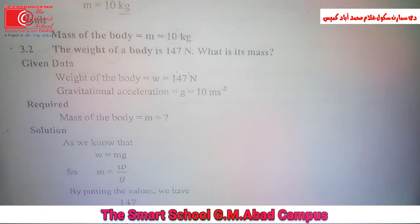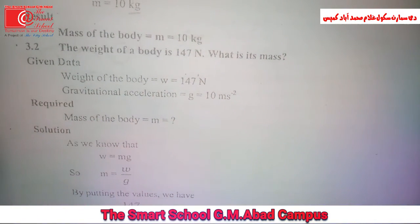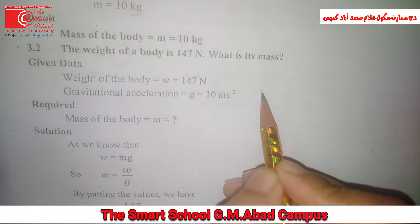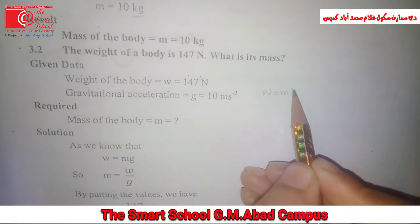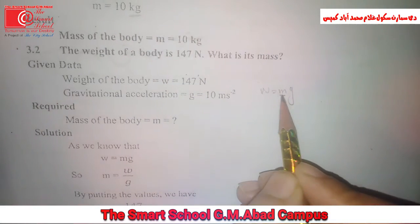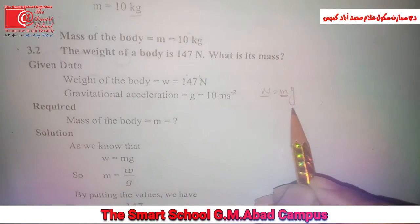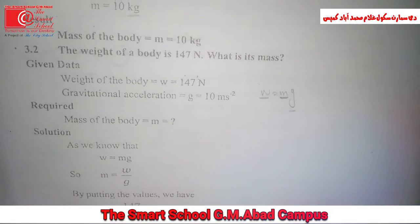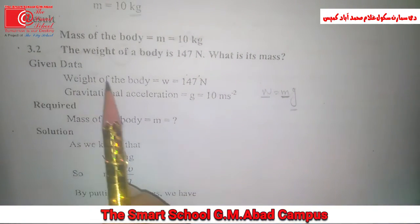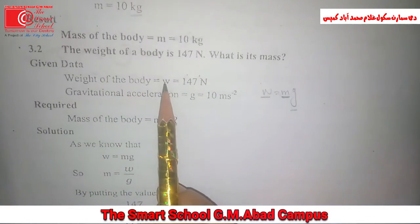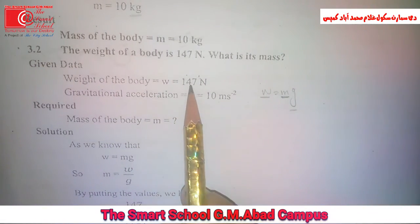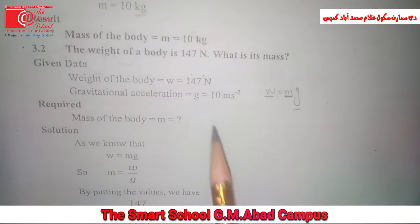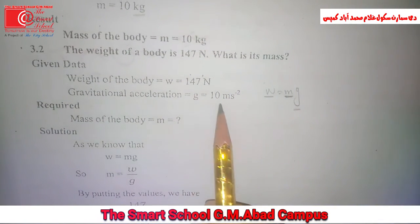Weight given, here we find mass. Given data: Weight of the body is equal to 147 Newton. Gravitational acceleration which is represented by g is equal to 10 meter per second square.